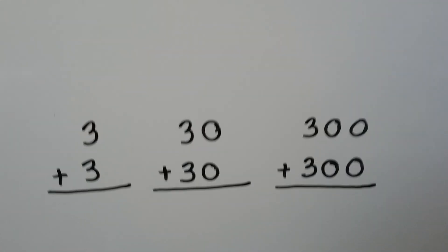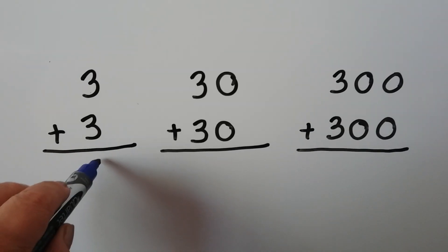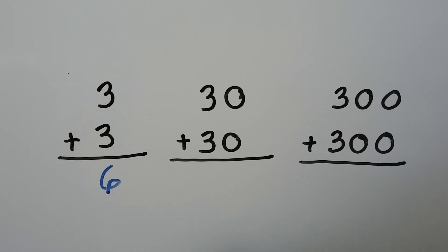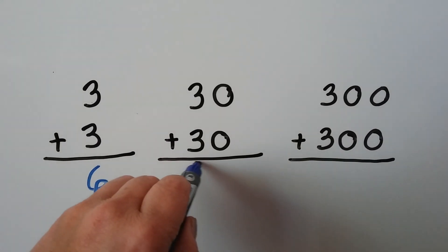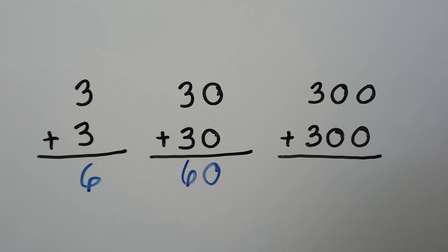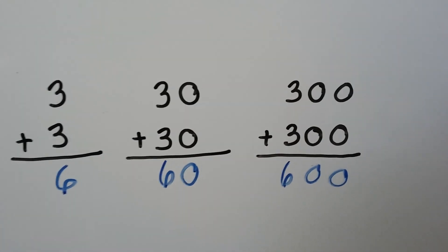Let's try it one more time. 3 plus 3, that's an easy one. 3 plus 3 is 6. For 30 plus 30, we just add the tens. 3 plus 3 is 6, and we add one zero. For 300 plus 300, we add the 3 plus 3 and get 6, and we add two zeros.